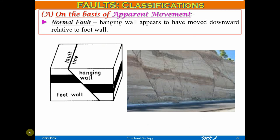On the basis of apparent movement — and this is very important — there are two types: normal fault and reverse fault. This is classification type one. On the basis of apparent movement of the blocks, in a normal fault the hanging wall appears to have moved downward relative to the foot wall. The classical diagram I was drawing from the beginning of this class is basically a normal fault.